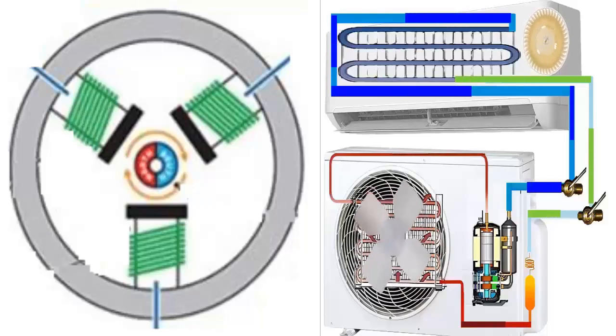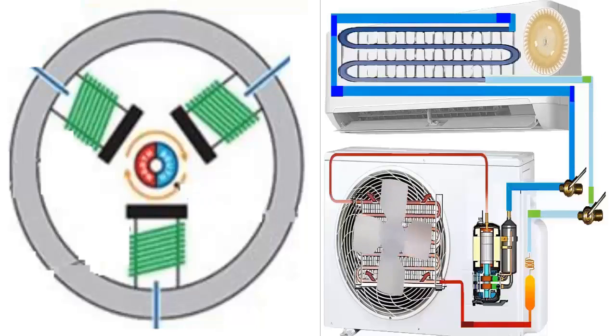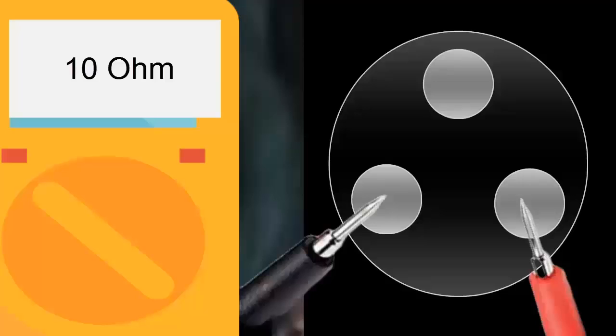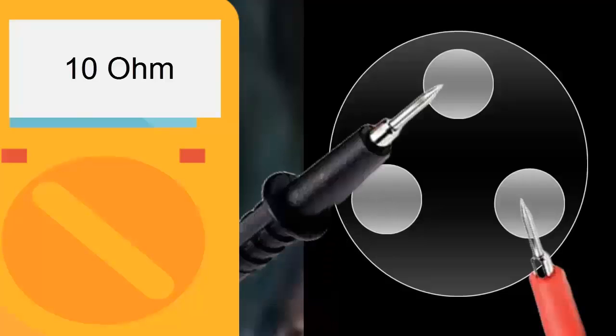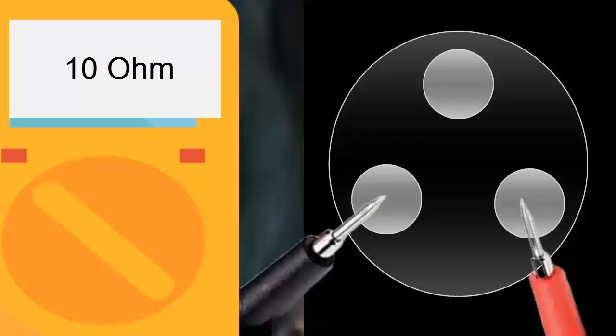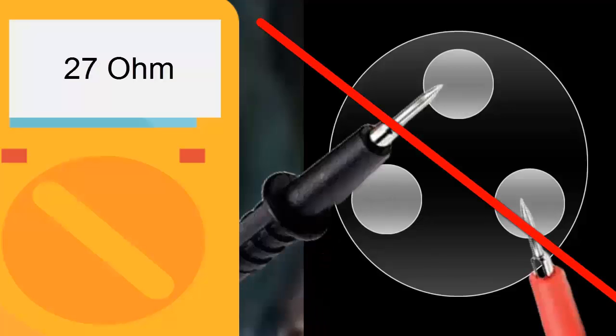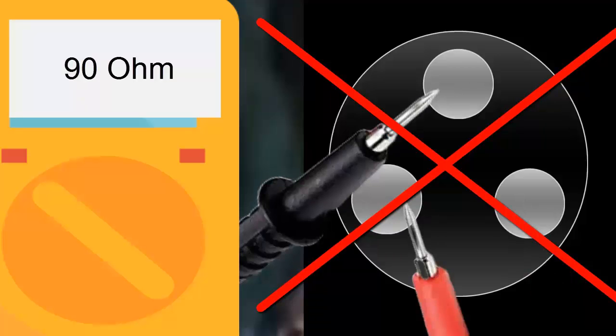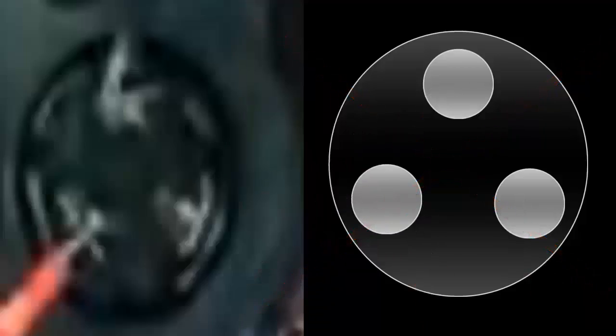3. For desynchronization, demagnetization, and phase loss issues, disconnect the compressor from the electronic board and, using a multimeter in the ohm scale, measure the resistance between the compressor pin pairs. The resistance values between each pin pair should be equal. Ensure the compressor connection cable is properly connected.